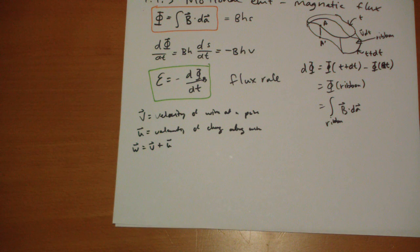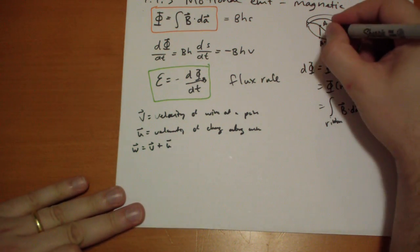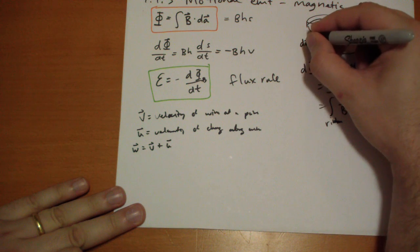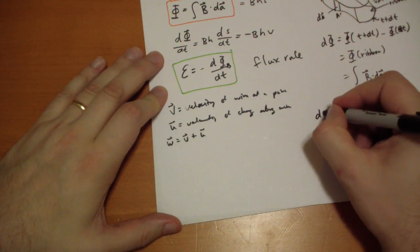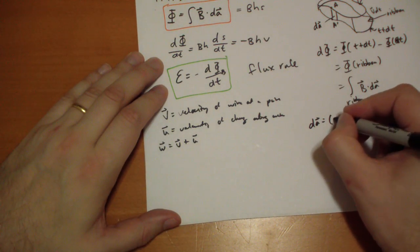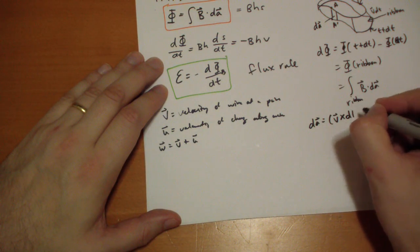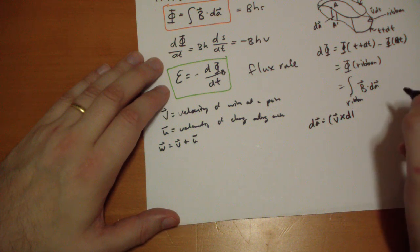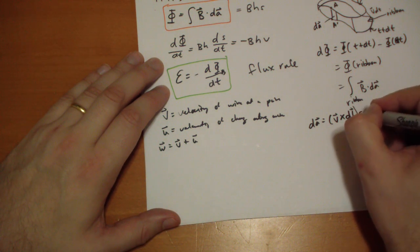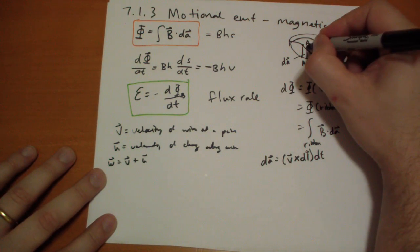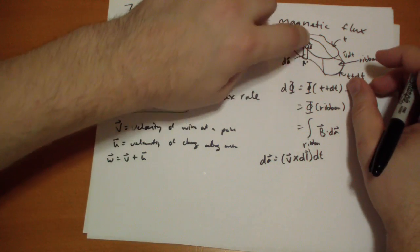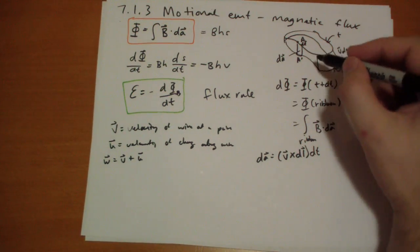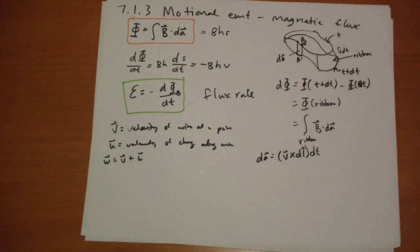The infinitesimal area unit. So, he draws this. This will call this DA vector. DA vector is going to be equal to V vector cross DL vector times DT. So this is DL vector times DT. DT is the, VDT is the height there. DL is the width of that particular segment.